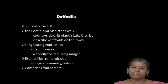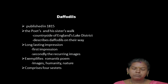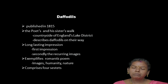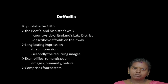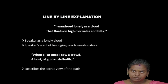This particular poem 'Daffodils' was published in the year 1815. Here the poet takes a walk along the lake along with his sister Dorothy Wordsworth in the countryside of England's Lake District, and it describes daffodils on their way. It creates a long-lasting impression in the mind of the readers. This poem exemplifies a very good example of a Romantic poem, and the poem comprises four sestets — a sestet refers to a set of six lines.